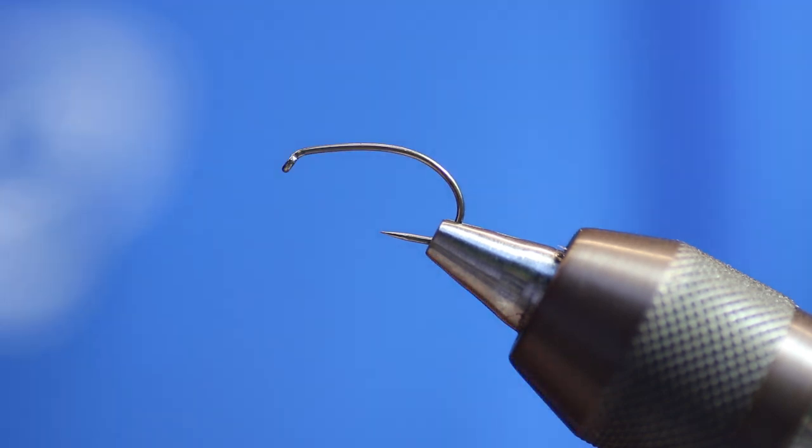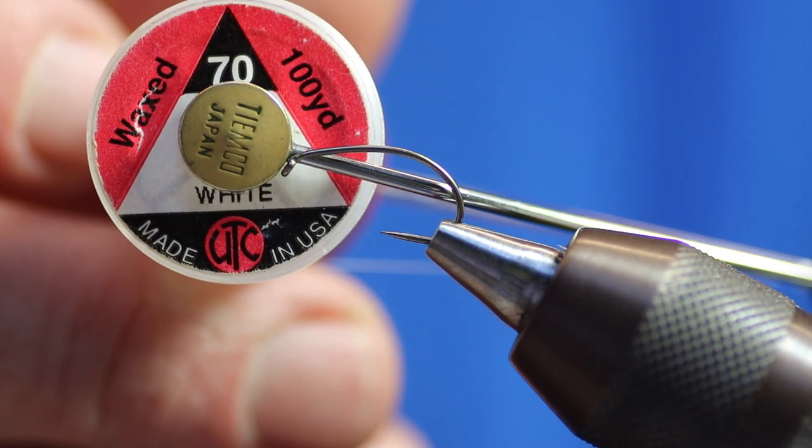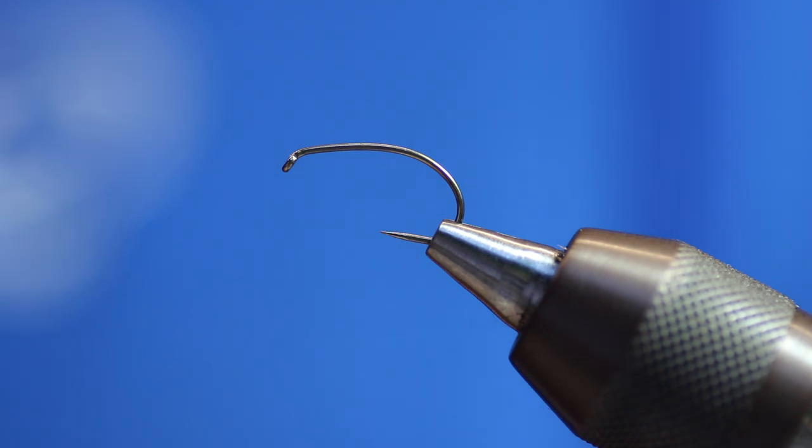I've got a size 10 barbless grub hook, this is my own grub hook. We're going to use UTC 70 in white. You could use any color you want, like orange if you wanted an orange head, but the reason I'm using white is because it allows me the option to put a couple of little black dots on the end, which gives me a set of eyes.